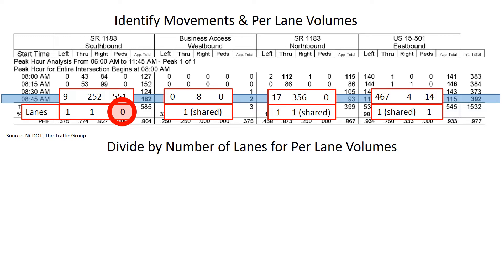We also have shared lanes, so we need to combine those volumes. On the southbound leg, we have 9 turning left and 252 going through. Westbound — that's the business access — it's only one shared lane with only 8 vehicles, so this likely won't be the critical movement, but we'll still carry it forward. On the northbound approach, 17 left and 356 through. It's a shared lane, so we'd include right turning vehicles, but there weren't any in this 15-minute period. For the eastbound approach, there's a shared left and through, so we add those volumes together for 471, and then a right turn lane of 14.